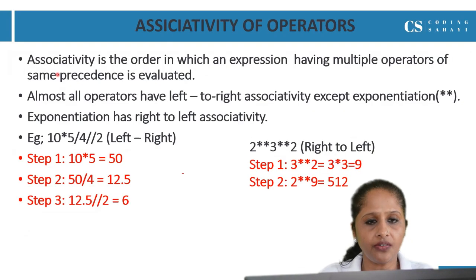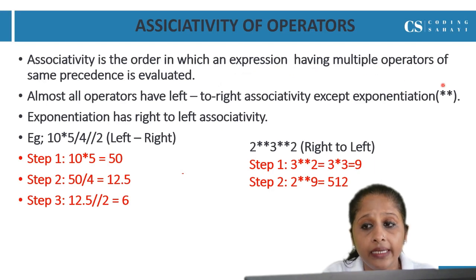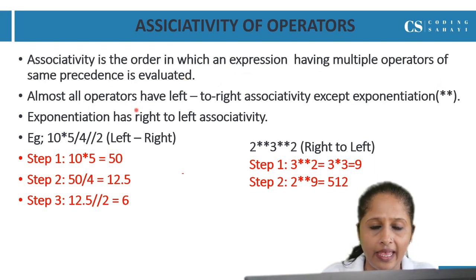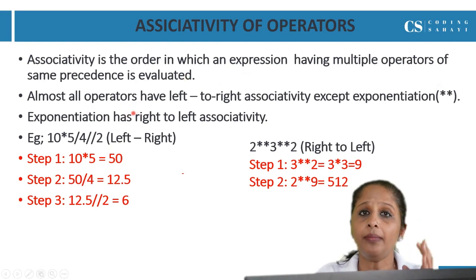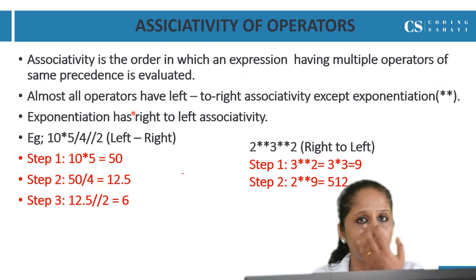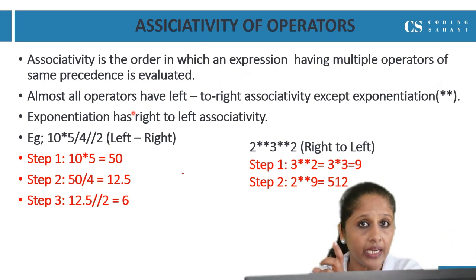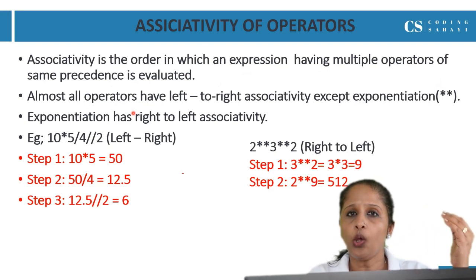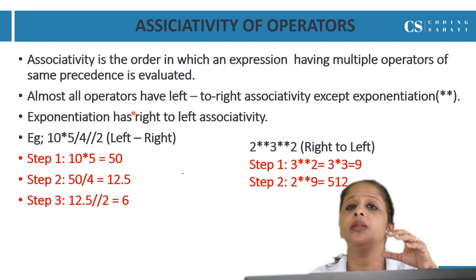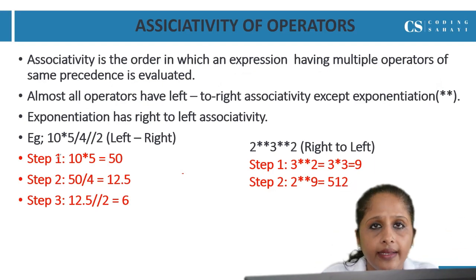Associativity is the order in which an expression having multiple operators of the same precedence is evaluated. Almost all operators have associativity from left to right. That is, if you have multiplication, then division, then floor division — everything in one expression — whichever comes first on the left side will be executed first.